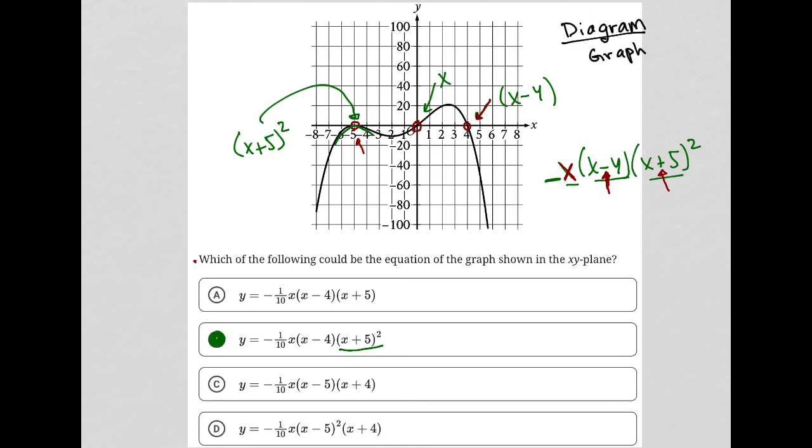And the only other thing that most students forget is this idea here. If the graph goes through the x-intercept, it's going to be an odd exponent, typically 1, but it could be 3 or 5. If the graph bounces off of the x-intercept, like what we see here at negative 5, you're going to have an even exponent, like 2, 4, or 6. But again, typically 2 on this test. So our answer is choice B.